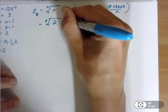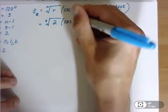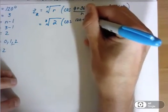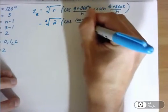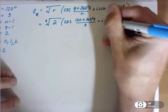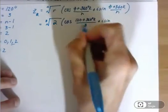Times cosine of theta, which is 120 degrees, plus 360 degrees times k, all over 3, plus i sine of this whole thing again.